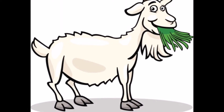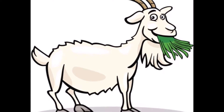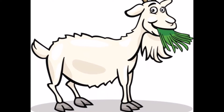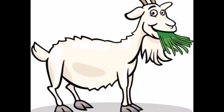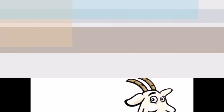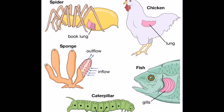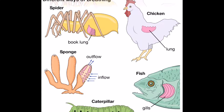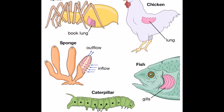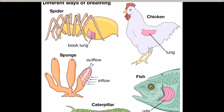Third step: animals feed on plants, thus passing the carbon compounds along the food chain. Most of the carbon these animals consume, however, is exhaled as carbon dioxide. This is through the process of respiration. The animals and plants then eventually die.